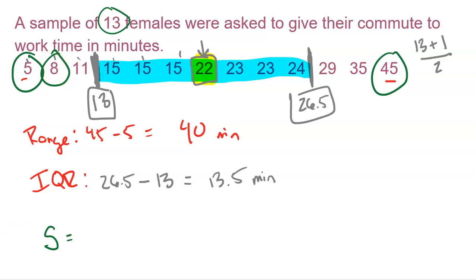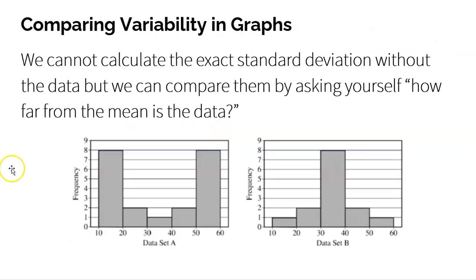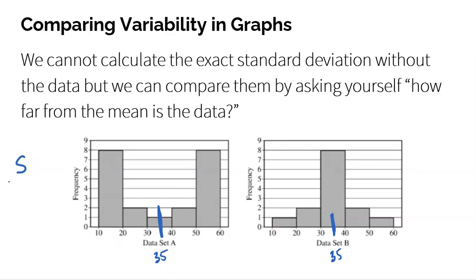One more important thing: understanding spread not just through numbers like range, IQR, and standard deviation, but also through graphs. Here we have two data sets — data set A on the left and data set B on the right — and we're asked to compare their spread. Both are symmetric, putting the mean right in the middle around 35. Standard deviation measures how far typical data is from the mean. Data set B has most of its data very close to the mean — it will have a very low standard deviation.